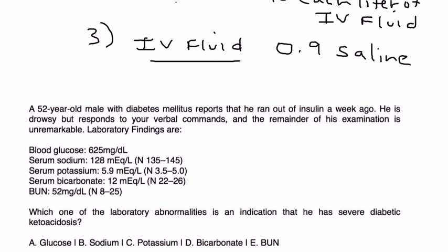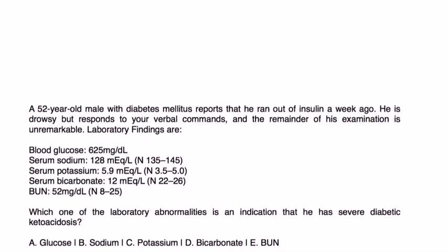So, let's take a look at some vignettes. 52-year-old male with diabetes mellitus reports that he ran out of insulin a week ago. He is drowsy, but responds to your verbal commands, and the remainder of his exam is unremarkable. Lab findings show blood glucose 625, serum sodium 128, serum potassium 5.9, serum bicarb 12, and BUN 52. Which of the following lab abnormalities is an indication that he has severe diabetic ketoacidosis?